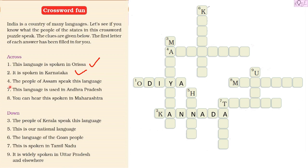Next is across number four — the people of Assam speak this language. The answer starts with the letter A. The language is Assamese. We write A, S, S, A, M, and then E, S, E — Assamese, which is the language of Assam.